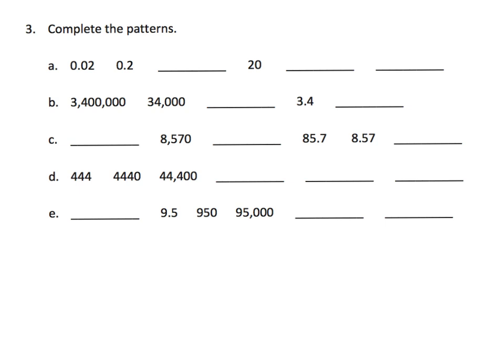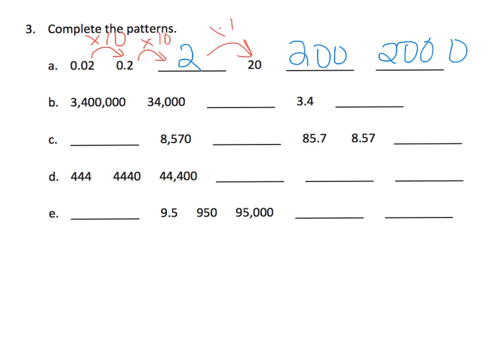Here we're just going to complete the pattern. Parents and teachers, we want students to look at the numbers and see if they can find the pattern. Initially they might get the answer but not be able to explain the mathematics. We're going to put a 2, then a 200, then a 2,000. The idea is to help students say: it's multiplying by 10, it's multiplying by 10, it's multiplying by 10.